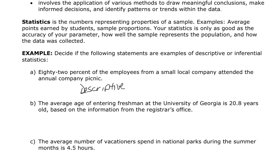The second example: the average age of entering freshmen at the University of Georgia is 20.8 years, based on information from the registrar's office. This sounds like it's just summarizing information with no conclusion being made. I've got a bunch of information, I was able to find the mean — which we'll talk about later — and this is descriptive. It's just telling me information.